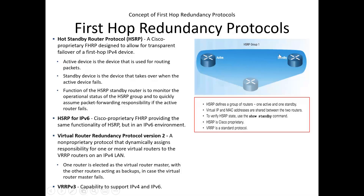The active and standby routers periodically exchange hello packets. Whenever the standby router stops receiving hello messages from the active router, it declares that the active router has failed and takes the role of the virtual router to become the default gateway. There is also Virtual Router Redundancy Protocol, which is a non-Cisco proprietary protocol, but as per our syllabus we configure HSRP since this is the Cisco Center of Excellence.